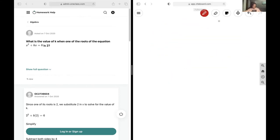For k, we want to find the value of k when one of the roots of the equation x squared plus kx is equal to 6 is 2.